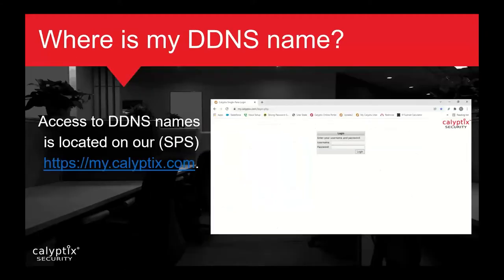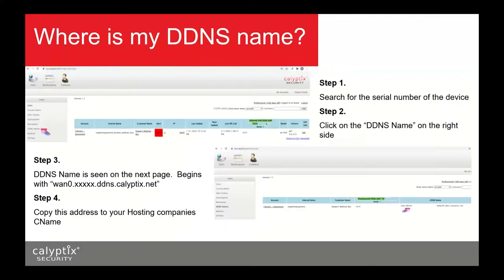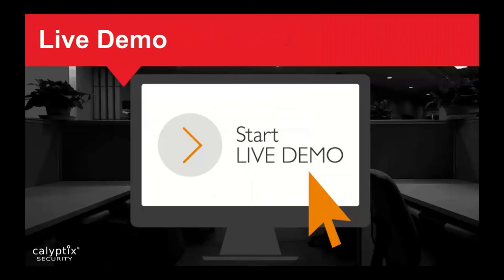So where can you find DynDNS on Calyptics? We've placed it in my.calyptics.com. If you don't have access, contact the sales team and they'll set up an account. After you log in and go to the portal, look on the left-hand side for the DynDNS name — that gives you your WAN primary and DDNS name, which you can then take to your domain registrar.